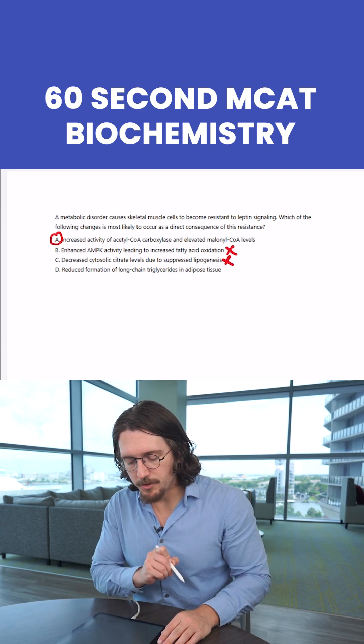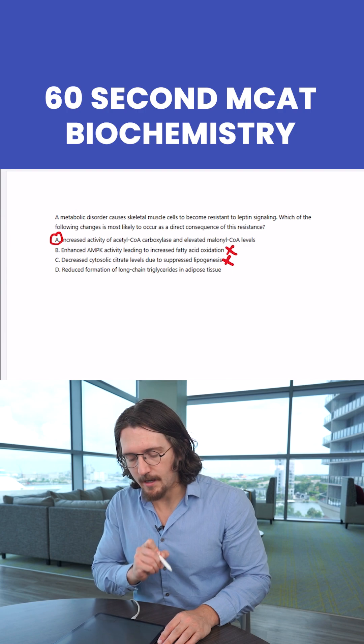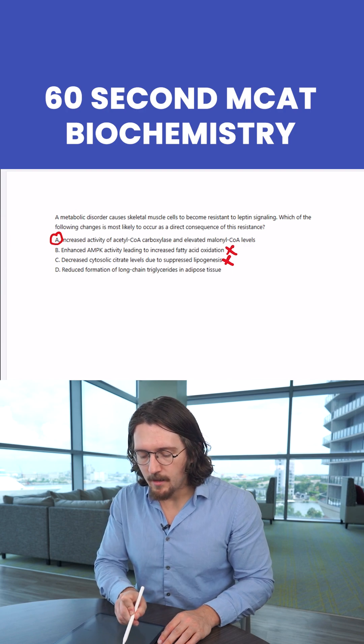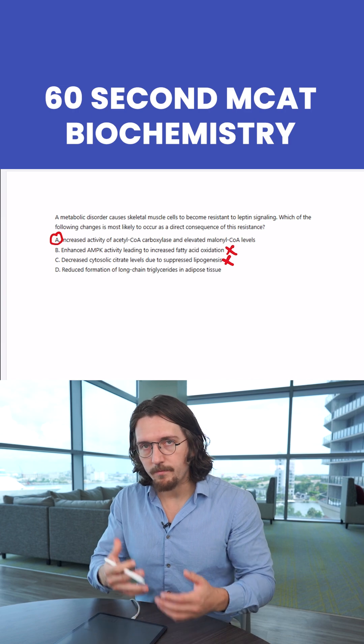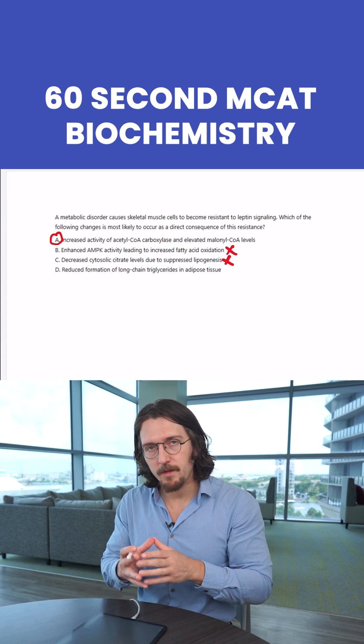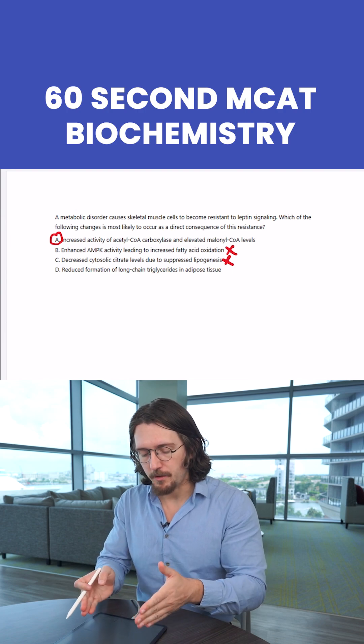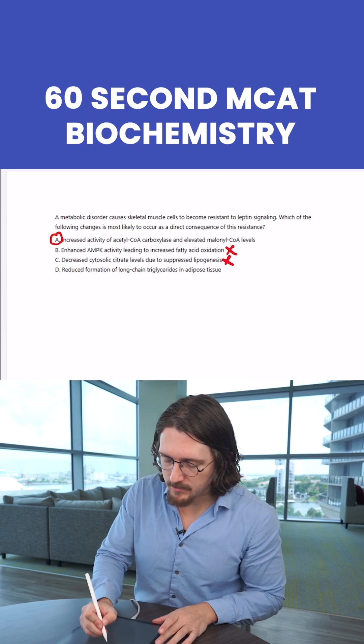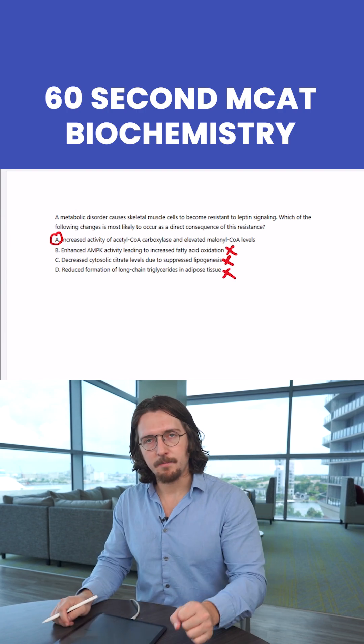And then D, reduced formation of long-chain triglycerides in adipose tissue. And again, long-chain triglycerides are formed in fatty acid synthesis. So you shouldn't have reduced formation, because that would be the normal effect of leptin. If you're resistant to it, you should actually have more formation of that. So that's wrong. And so A is the best answer.